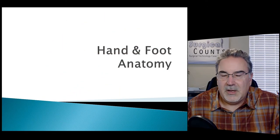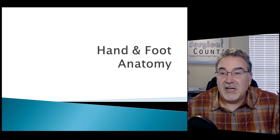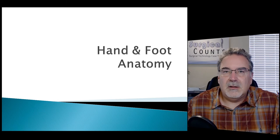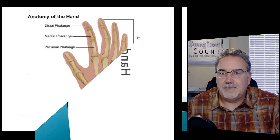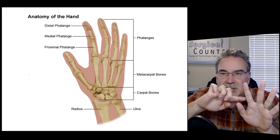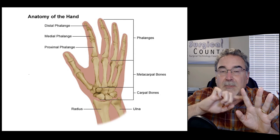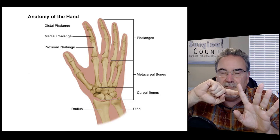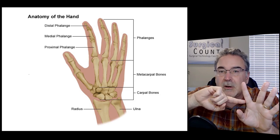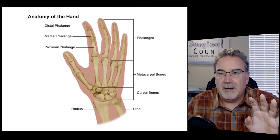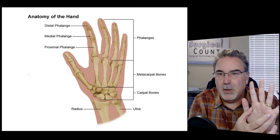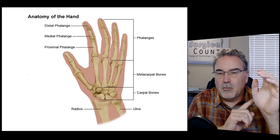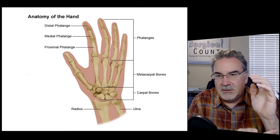Now, hand and foot anatomy. In one of the books used for surgical technology, hand and foot surgery is included in the plastic surgery chapter, which is why we cover it here. The hand is made up of many small bones. We have the phalanges in the fingers, named by position: the distal or distant phalange, medial or middle phalange, and proximal or closer phalange. Within the palm we have metacarpal bones, and around the wrist we have carpal bones. Leading down the arm we have the radius, the larger bone, and the ulna, the smaller one.